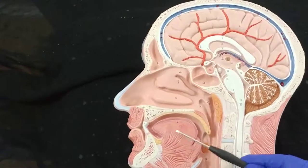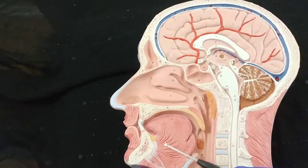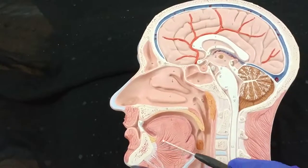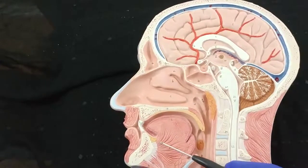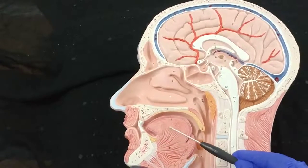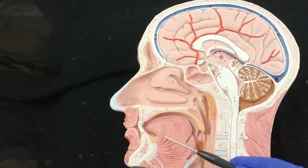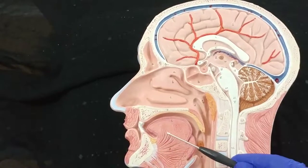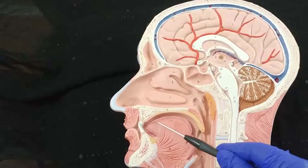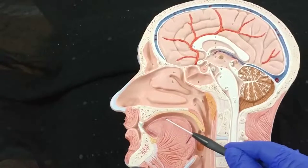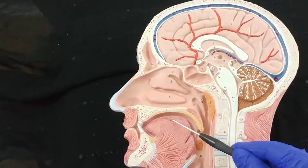This is the tongue — the cut section of the tongue. It has extrinsic muscle and intrinsic muscle. I'm seeing one extrinsic muscle here. This is the genioglossus muscle. This is an intrinsic muscle — the superior longitudinal muscle is here.